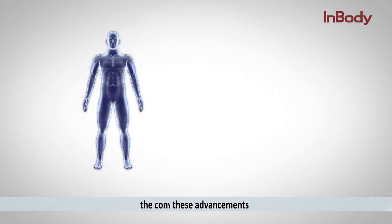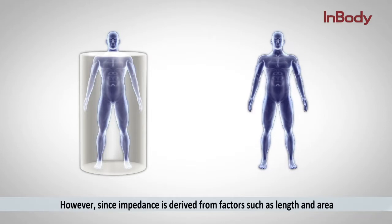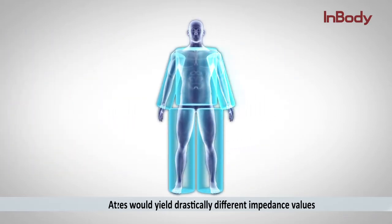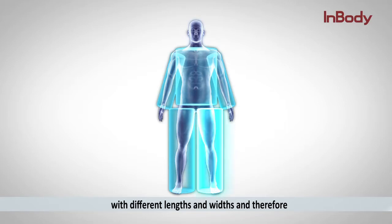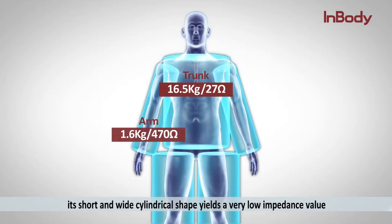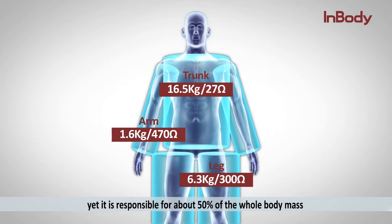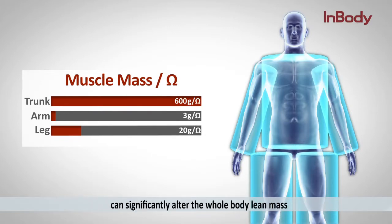Prior to these advancements, the conventional BIA method considered the human body as one cylinder and only offered a single whole-body impedance value. However, since impedance is derived from factors such as length and area, different sizes yield drastically different impedance values. At a closer look, our body is not one but five cylinders with different lengths and widths, and therefore measurements should be segmentally analyzed. Furthermore, the trunk's short and wide cylindrical shape yields a very low impedance value — it accounts for only around 5% of whole-body impedance yet is responsible for about 50% of whole-body mass, meaning even a small change of one to two ohms in trunk impedance can significantly alter whole-body lean mass.